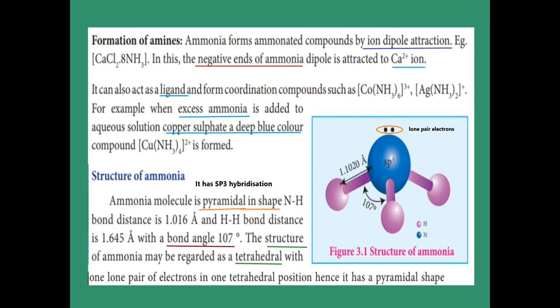Structure of ammonia: the hybridization is sp³. The shape of ammonia is pyramidal (trigonal pyramidal). The N–H bond distance is 1.016 Å, and the H–N–H bond angle is 107° because of the lone pair of electrons on nitrogen. The geometry is tetrahedral but the shape is pyramidal due to the lone pair on nitrogen.